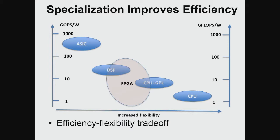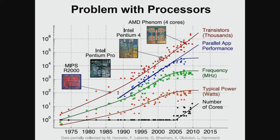FPGAs — field programmable gate arrays — can be flexible as well, and can be more efficient if well optimized for a particular application. But most systems today are implemented using CPUs, so the goal is to make CPUs more energy efficient.